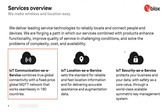Just a quick overview on services. As you know, the services team are forging a path in which our services, combined with products, enhance the functionality, improve quality of service, and solve problems of complexity, cost, and availability for our customers. The IoT Communication as a Service suite combines true global connectivity with a fixed-priced MQTT network, with MQTT Anywhere working seamlessly in 190 countries, and a range of complementary products all based on MQTT.